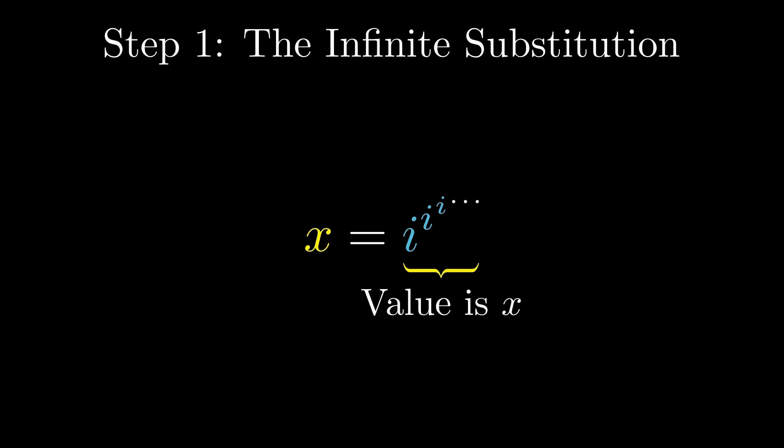Now notice something important. The entire tower has value X, but the exponent on the very first i is also the same infinite tower. That means the exponent is also X. So the infinite structure collapses into a single equation.